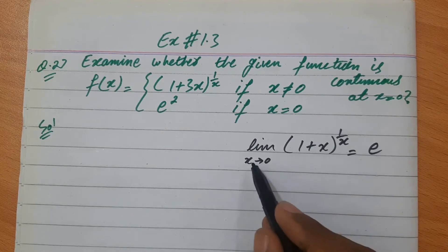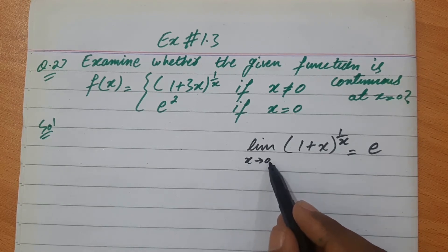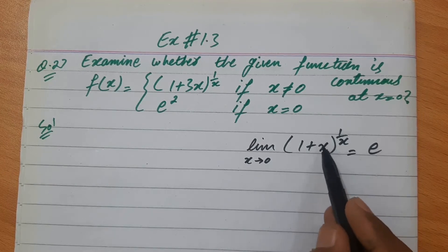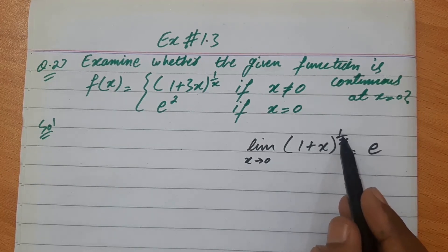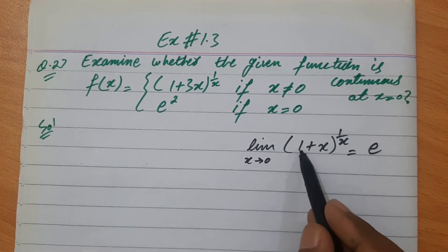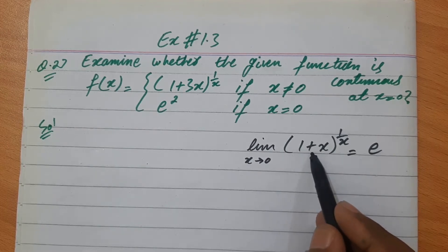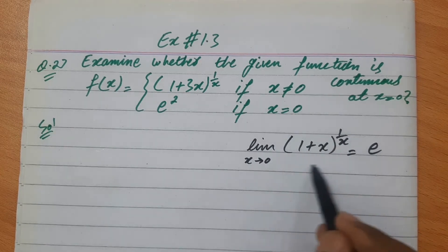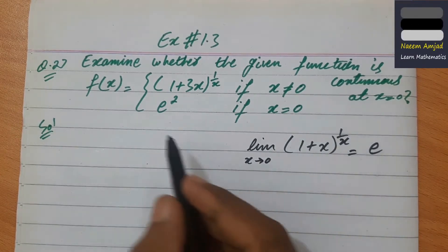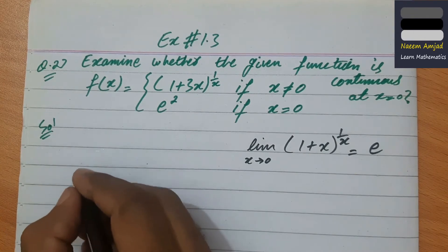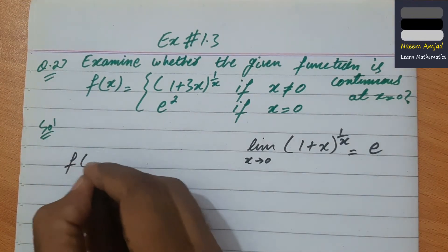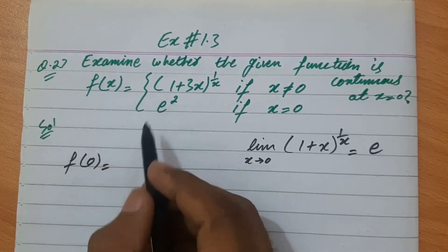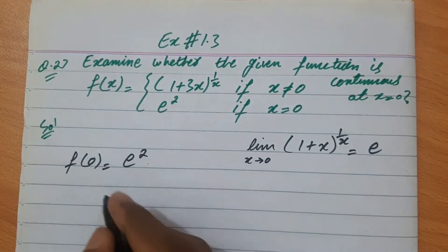जब x, 0 को approach करे और form हो 1 plus (कोई term) और उस term का reciprocal power में हो — यानी 1 उस term के ऊपर — तो यह e के equal होता है। सबसे पहले f(0) find करते हैं: अगर x=0 हो तो function e² देता है।